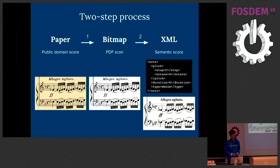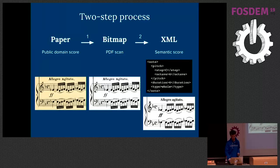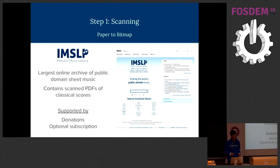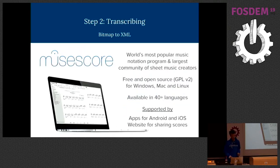Firstly, you need to scan the music to create bitmaps, but then you don't want to just stop with a PDF. You want something you can actually interact with — musical source code. The next step is to convert it into an XML format so you get a semantic score that renders with crisp lines and can be used to render audio. Step one is covered by IMSLP, the world's largest community of people who find public domain scores in libraries and scan and upload them.